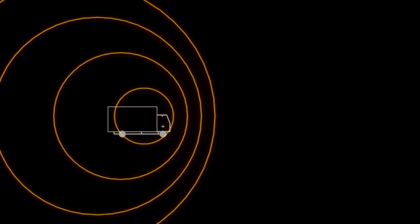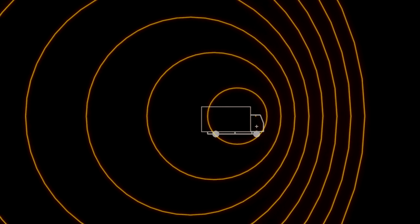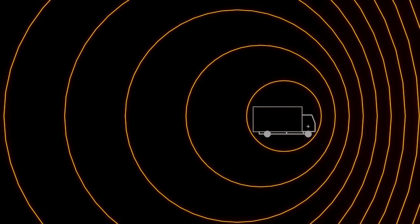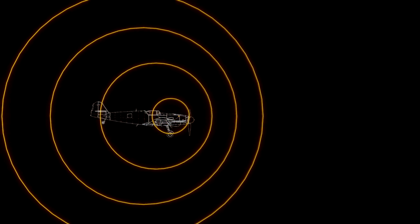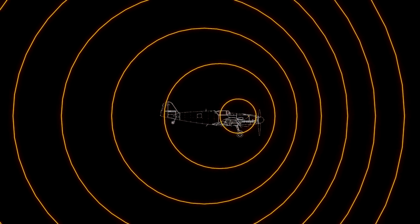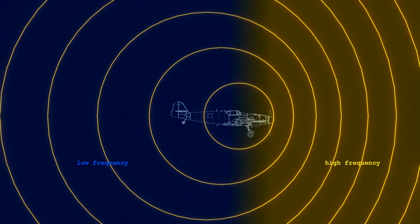The Doppler shift can be heard as change of pitch of a passing ambulance siren. Same with the engine noise of a passing plane. This happens because the frequency of the sound waves relative to the observer changes. The wave fronts of the approaching plane are compressed, resulting in a high frequency for the observer. This changes when the plane has passed. Its wave fronts are stretched out, resulting in a low frequency.